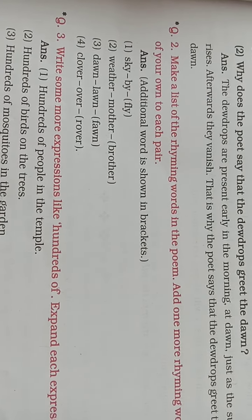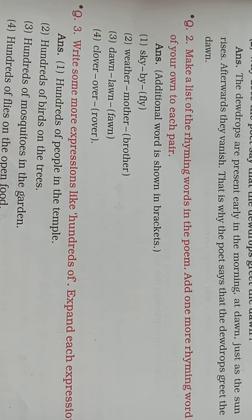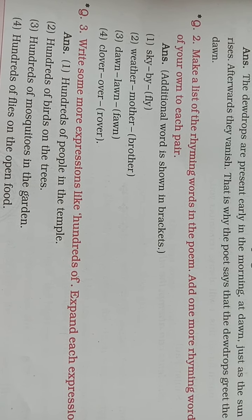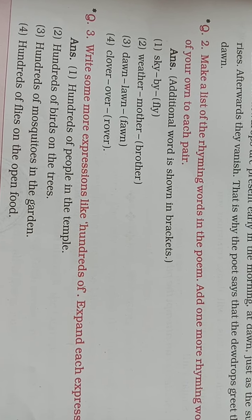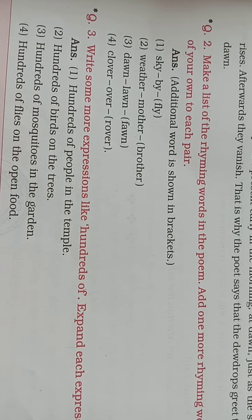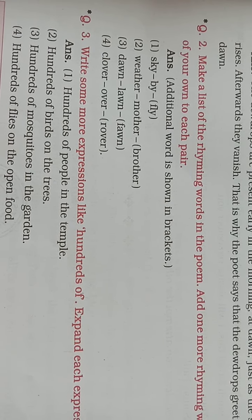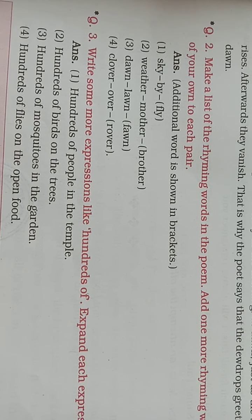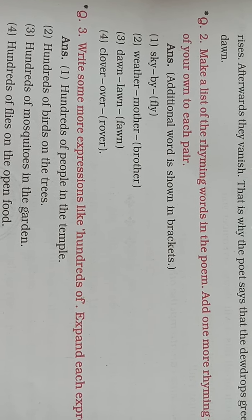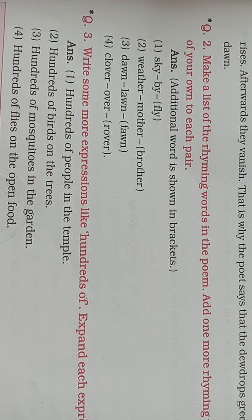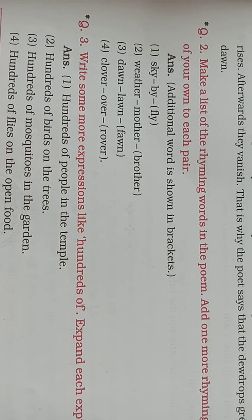Question number 2: make the list of rhyming words in the poem. Add one more rhyming word of your own to each pair. Sky, pie, fly — you can add one more. Weather, mother, brother, teacher.